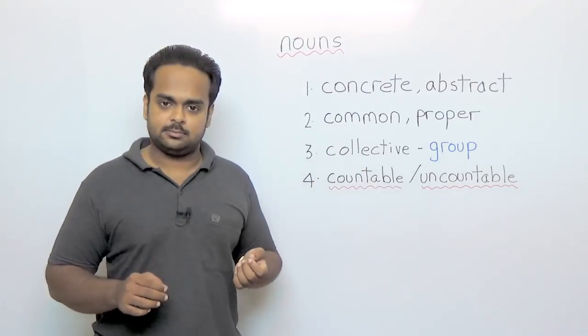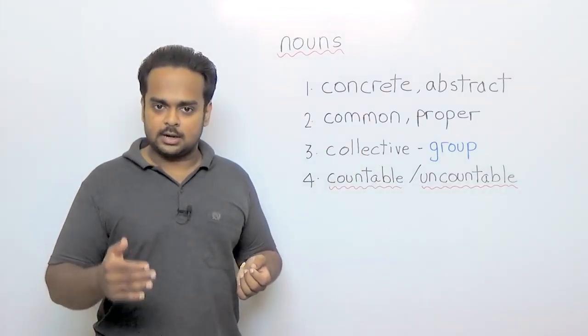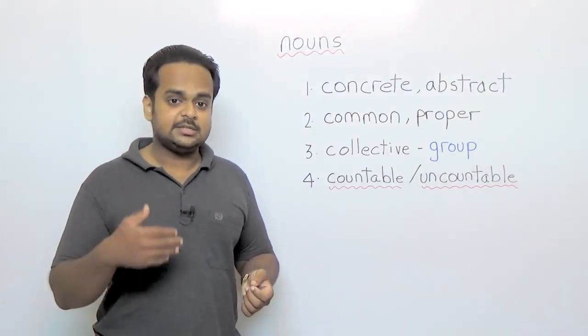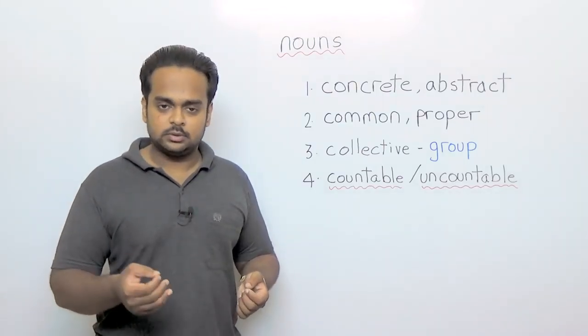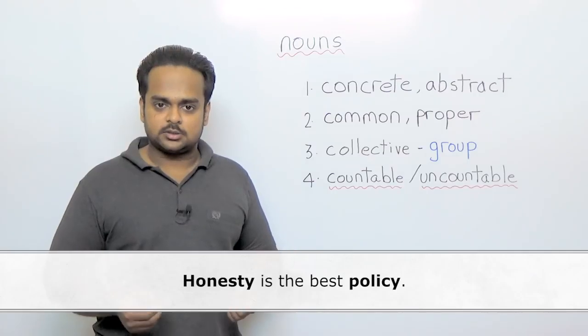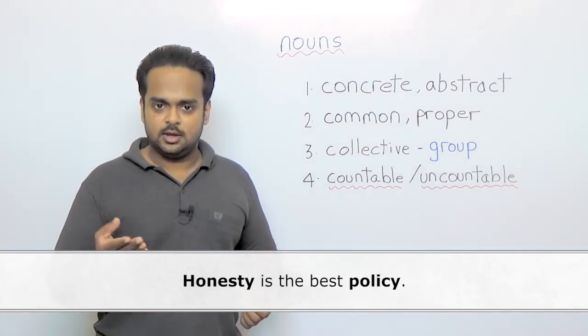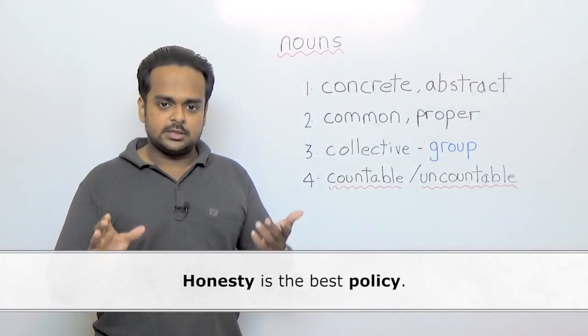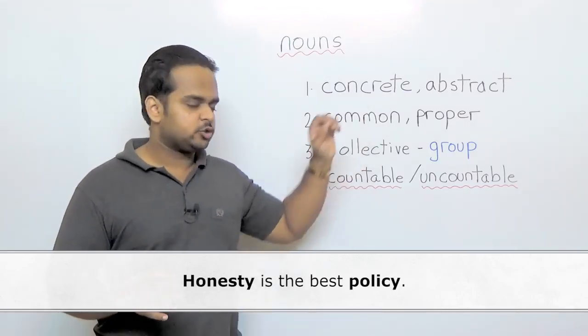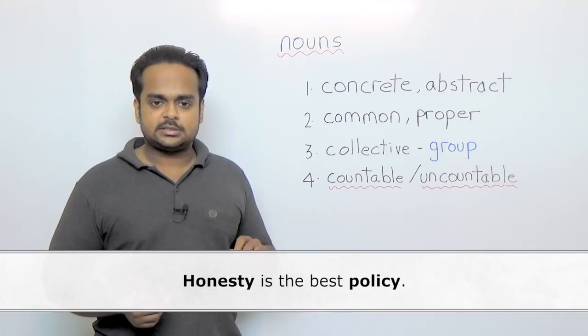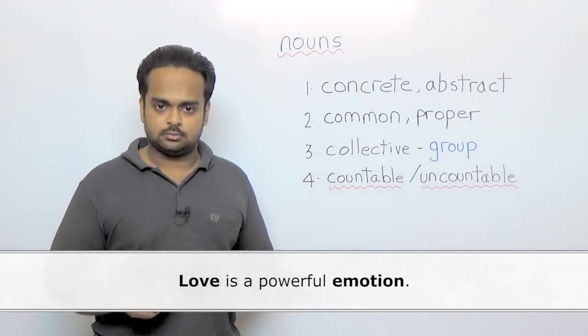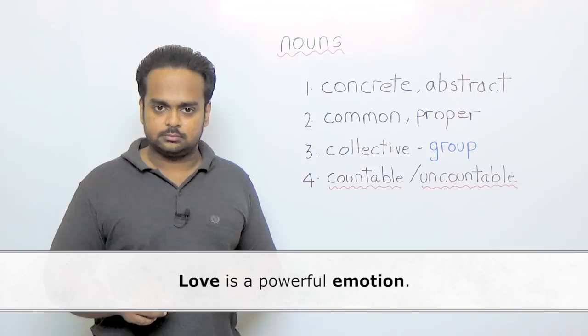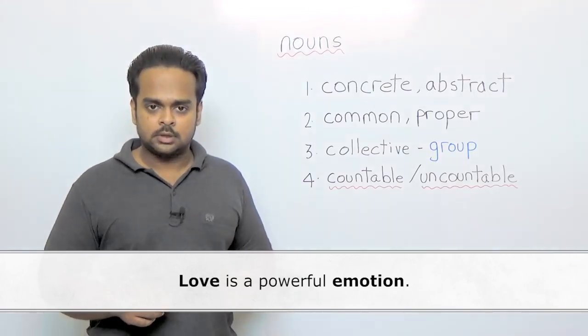So what are abstract nouns then? Abstract nouns are nouns that don't have a physical existence. That means we cannot touch them or see them and these are ideas and feelings. Now in this sentence, honesty is the best policy. It's a very popular proverb in English. In that sentence, honesty and policy are both abstract nouns. And in this next example, love is a powerful emotion. Love is the name of a feeling like anger, happiness or sorrow and love is a noun. Emotion is also a noun.